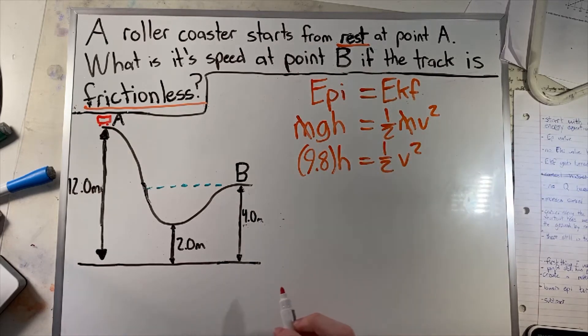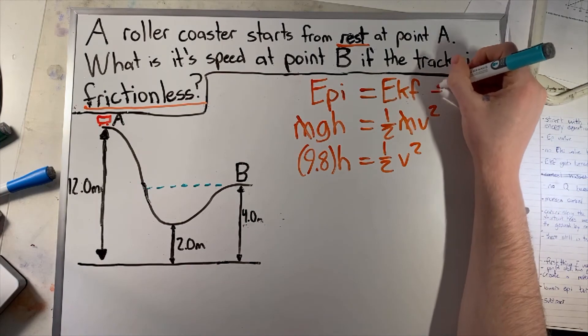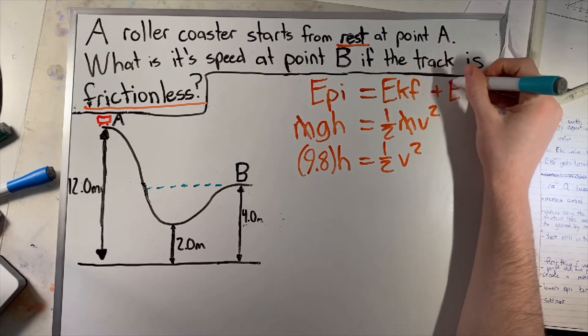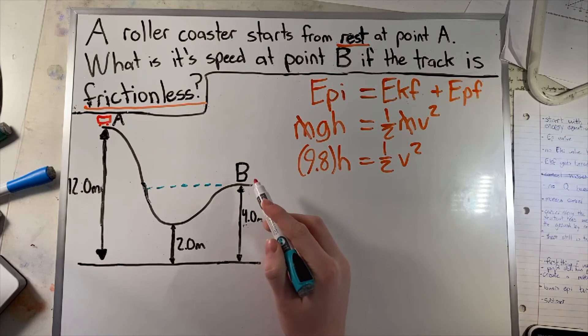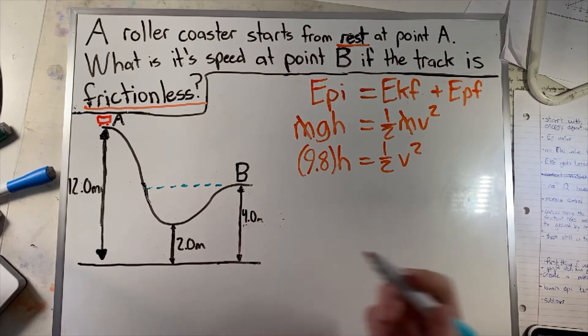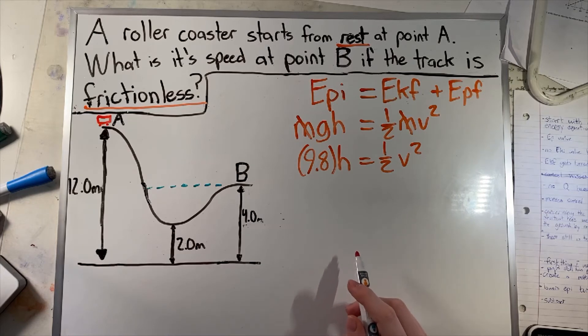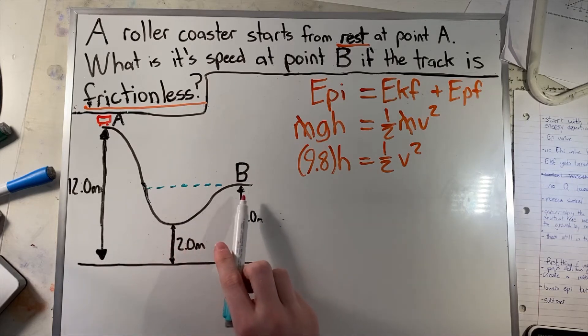Now concerning the height, one thing I want to say is that technically we could still add a potential energy final to our equation because point B is still four meters off the ground and therefore has potential energy. But there's a little shortcut we can do, which is we can create a new reference point at the height of point B.